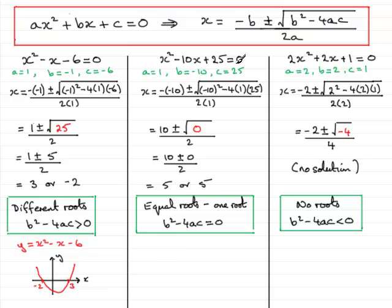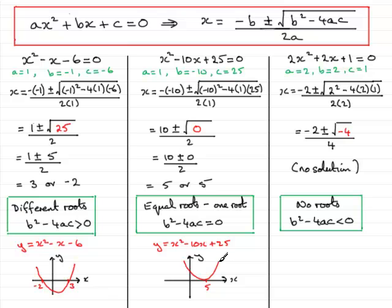When we come to the graph of y equals x squared minus 10x plus 25, drawing our axes, we've got one root, so the curve actually touches the x-axis just at 5. And finally, on the last equation, if we sketch the axes for y equals 2x squared plus 2x plus 1, there are no roots, so this would not intersect the x-axis at all — the graph would look something like this.